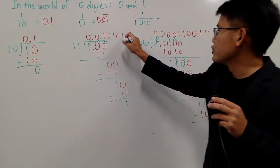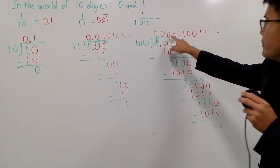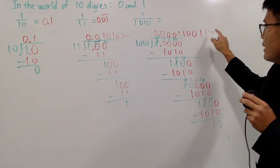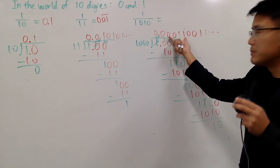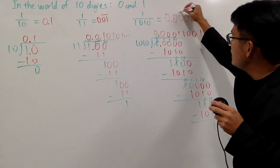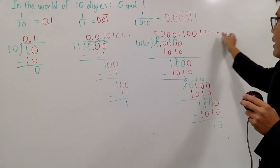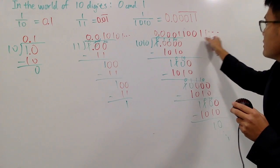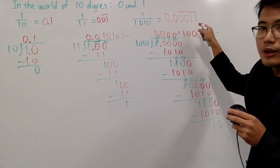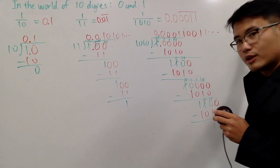So the answer to 1 over 1010 becomes this. You have to be careful: you see 0.00011 0011 0011... So only this part is being repeated. You will have to write down 0.00011, but only the 0011 part is being repeated. You have 2 zeros, 2 ones, 2 zeros, 2 ones — except for the first part where you have 3 zeros. So you put a bar only over the 0011 part, meaning 0.00011 and then 0011 repeating — 2 zeros, 2 ones, 2 zeros, 2 ones, and so on forever.